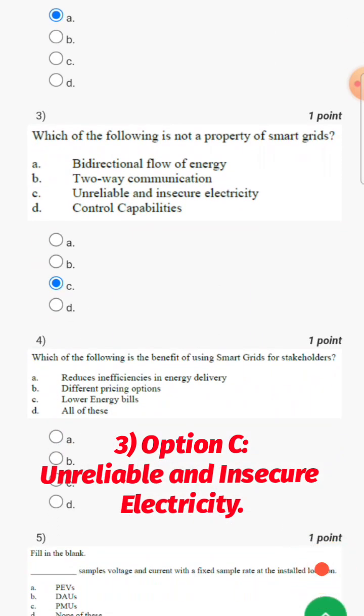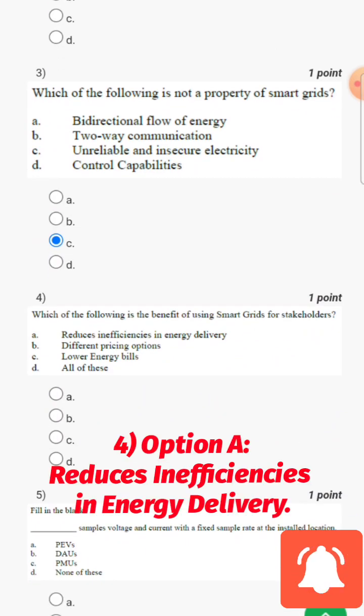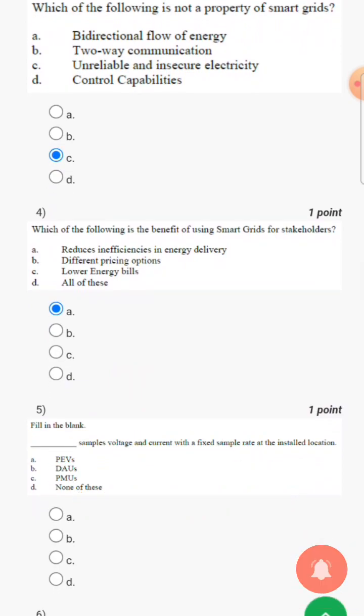Then we have which one of the following is the benefit of using smart grids for stakeholders? So its answer will be reduce inefficiencies in energy delivery. So option A is the correct answer.